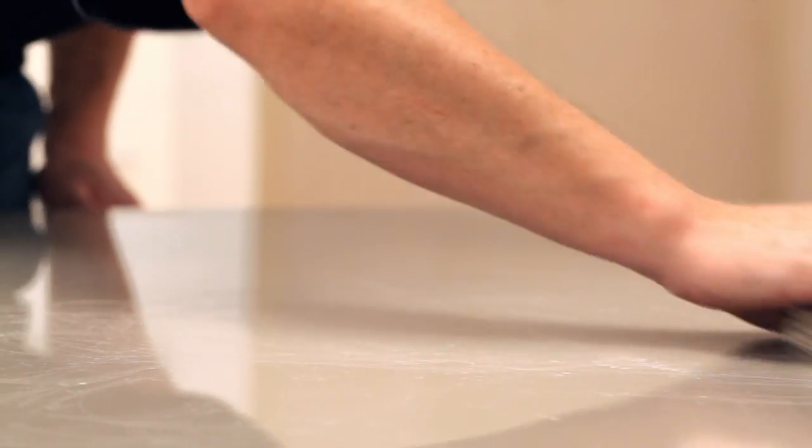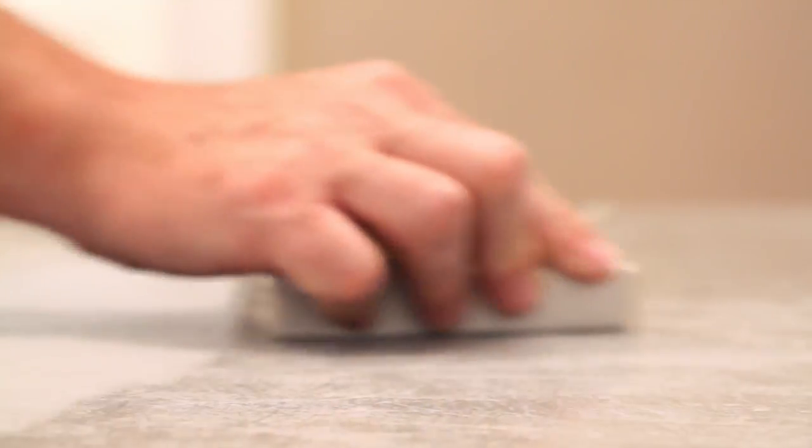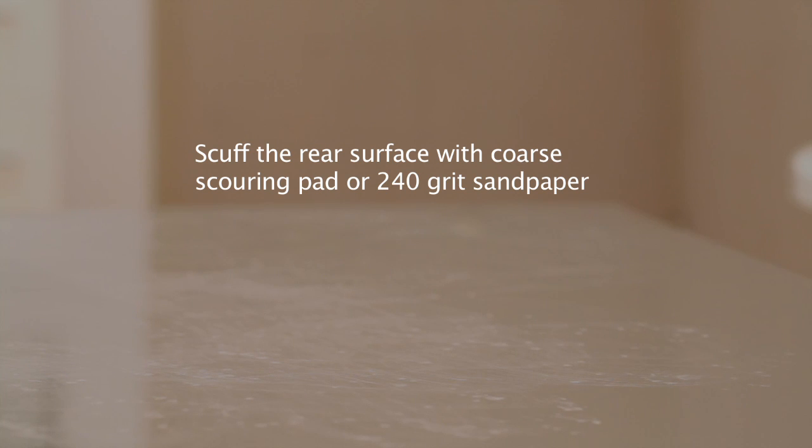Now scuff the rear coloured surface with a coarse scouring pad or 240 grit sandpaper. Do this in a circular motion so that you cover the rear of the sheet, not leaving any areas that are unscuffed. Scuffing the rear of the sheet increases the adhesion effect when the sheet is applied to the wall.